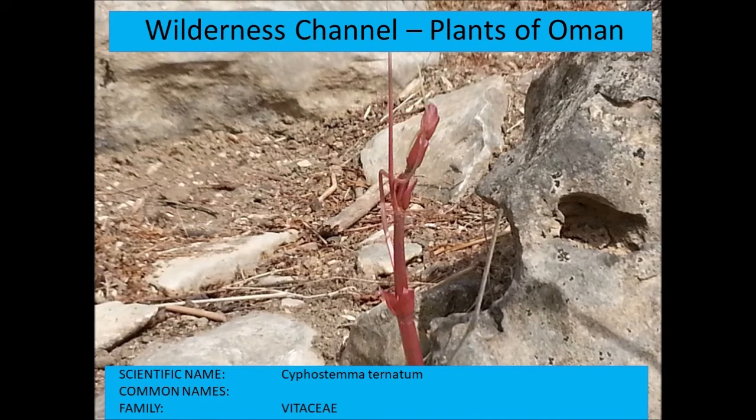Cyphostemma ternatum is one of the grape-like species — similar to Cissus quadrangularis, which grows in Dhofar.